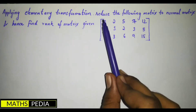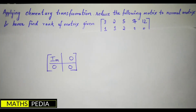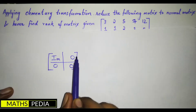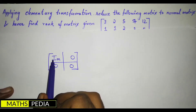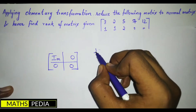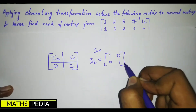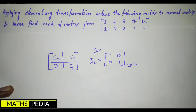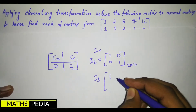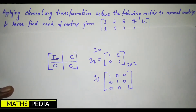What is normal form? In simple words, the normal form is a square matrix Im, where Im is the identity matrix. For example, I2 is the 2×2 identity matrix: [1,0; 0,1]. I3 is the 3×3 identity matrix: [1,0,0; 0,1,0; 0,0,1]. So Im means the m×m identity matrix, where m can be 1, 2, 3, 4, or any value.